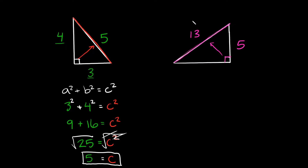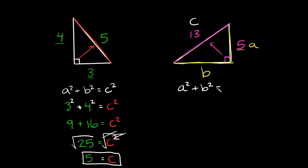The hypotenuse is labeled with the variable C, so 13 is C. That means the other two sides are A and B. We'll call five A, and label the missing side B. The equation is A squared plus B squared equals C squared. Filling this out: five squared plus B squared equals 13 squared.